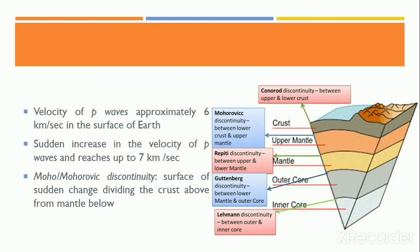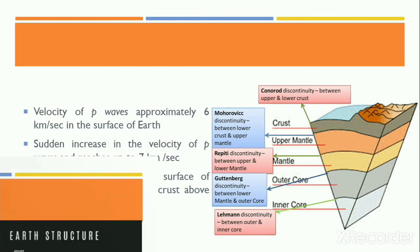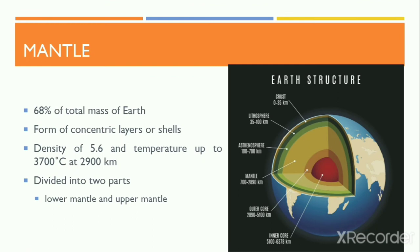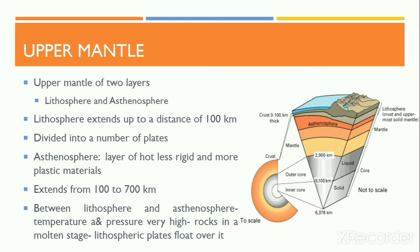Below the Mohorovičić discontinuity lies the second layer of the Earth: the mantle. The mantle covers 68% of the total mass of the Earth. The rocks in this layer are generally denser and appear in the form of concentric layers or shells. The average density of the mantle is about 5.6 grams per cubic centimeter and the temperature reaches 3,700 degrees Celsius at a depth of 2,900 kilometers. The mantle is subdivided into the upper mantle and the lower mantle, with the upper mantle consisting of two layers: the lithosphere and the asthenosphere.